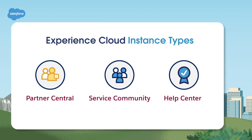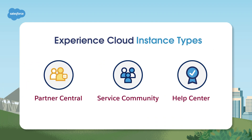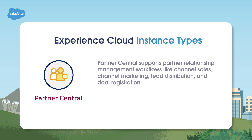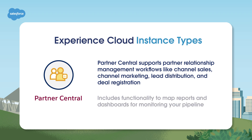Experience Cloud is available in three different instances, each with a specific purpose. Partner Central supports partner relationship management workflows like channel sales, channel marketing, lead distribution, and deal registration. It also includes functionality to map reports and dashboards for monitoring your pipeline.